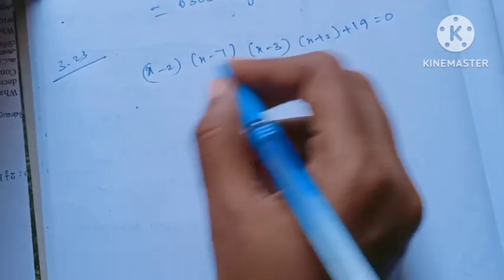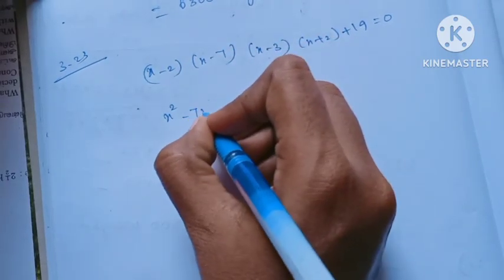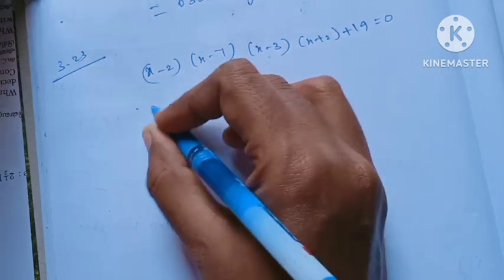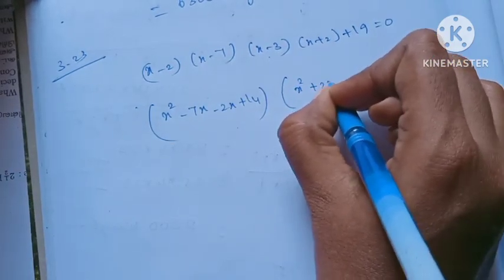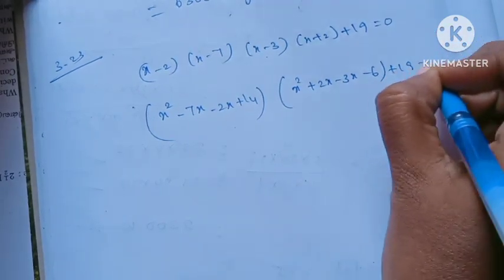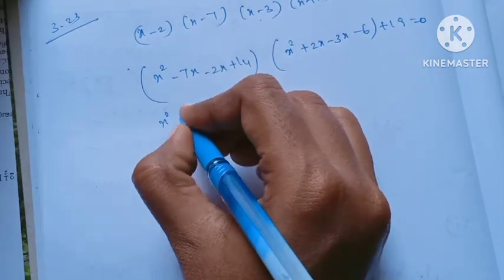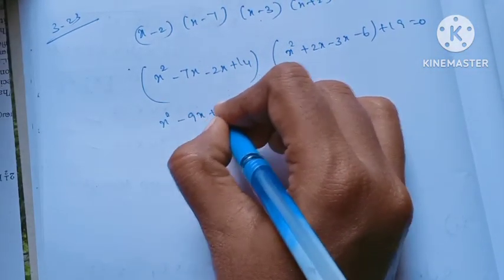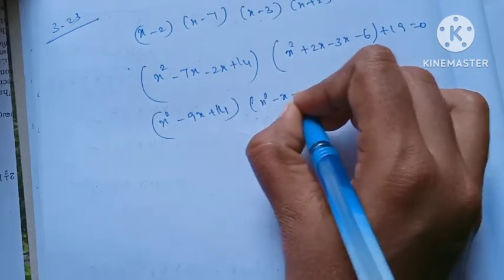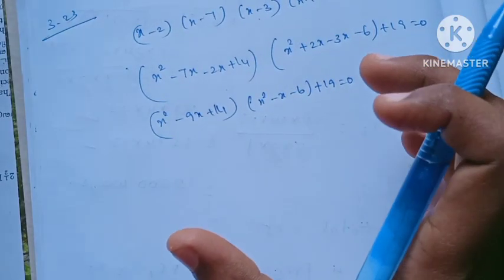We multiply and simplify. 2 - 3x - 6 + 19 is equal to 0. If we simplify, minus 9x + 14 is equal to 0.